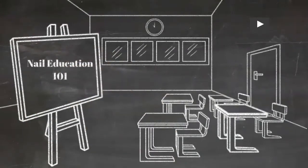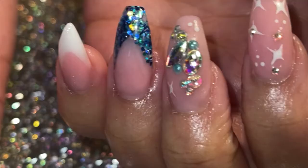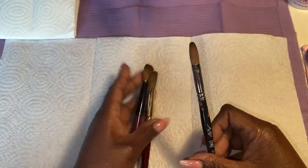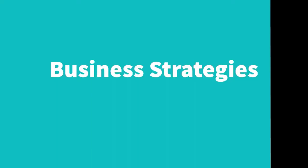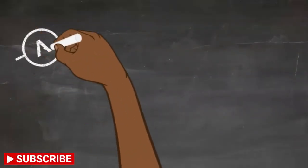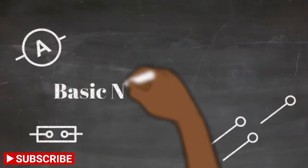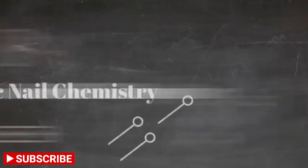As a nail technician, we work a lot with chemicals, so having a basic understanding of nail chemistry is a must. So what are chemicals? Chemicals are a substance obtained by a chemical process or producing a chemical effect.